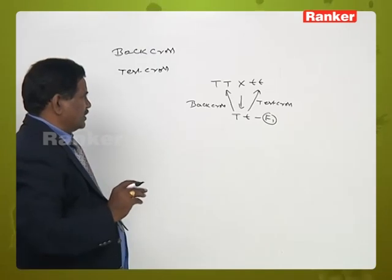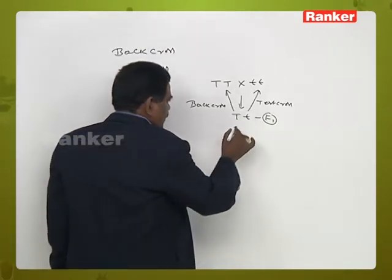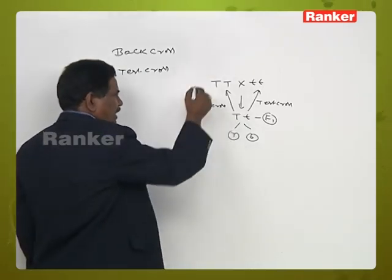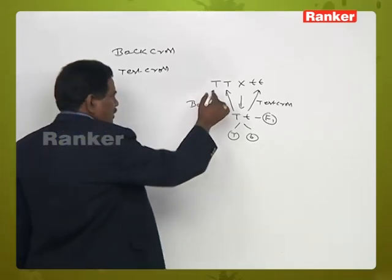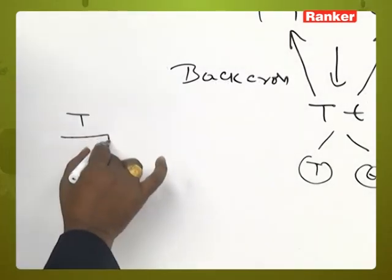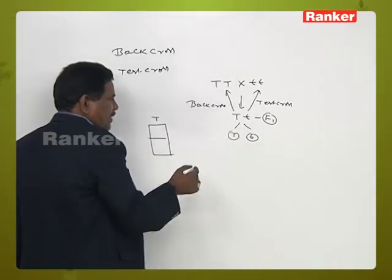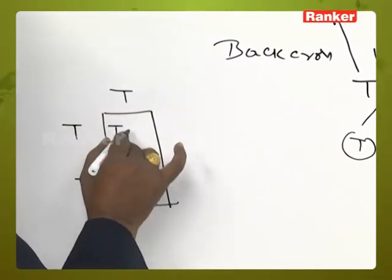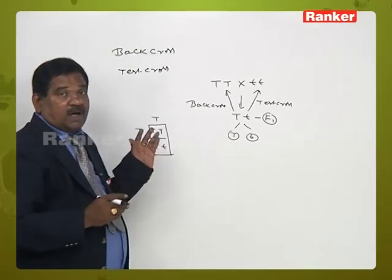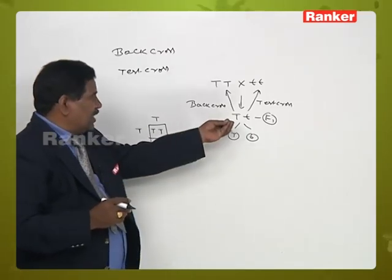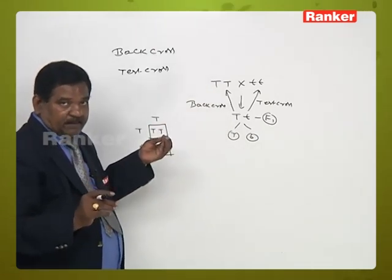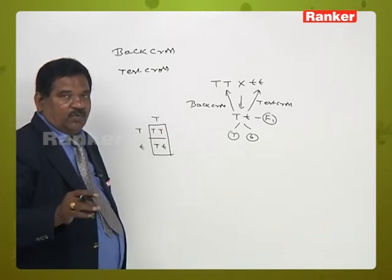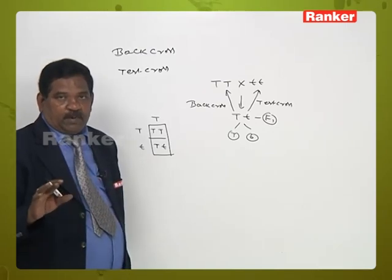In a backcross, the F1 hybrid produces two types of gametes. The dominant parent produces only one type of gamete. When the F1 hybrid is crossed with the dominant parent, all progeny are tall — 100% tall, no dwarf. So in a backcross, no recessive character is expressed.